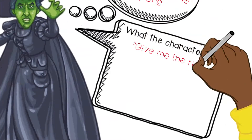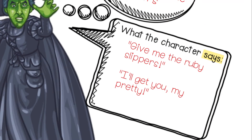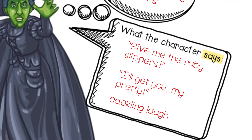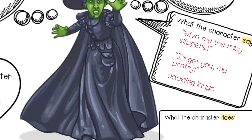The slippers used to belong to her sister, the Wicked Witch of the East, before she died. And now she wants them for their power. She says things like, "Give me the ruby slippers" and "I'll get you, my pretty!" in a very nasty tone when Dorothy doesn't give her the slippers. She also has a wicked cackling laugh. Throughout the story, the Wicked Witch does mean things to Dorothy and her friends — the lion, scarecrow, and tin man.